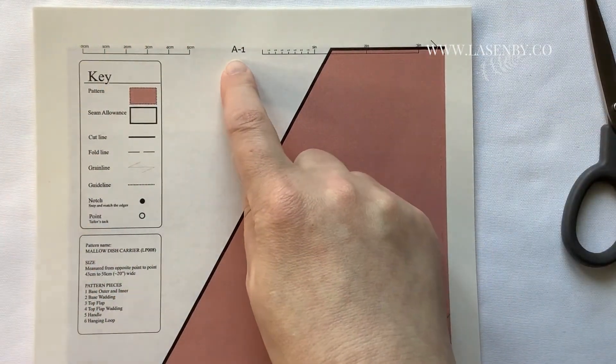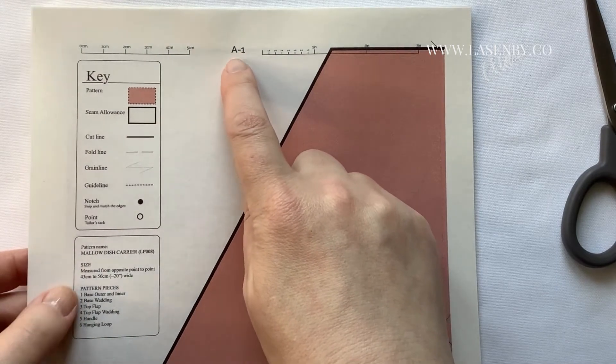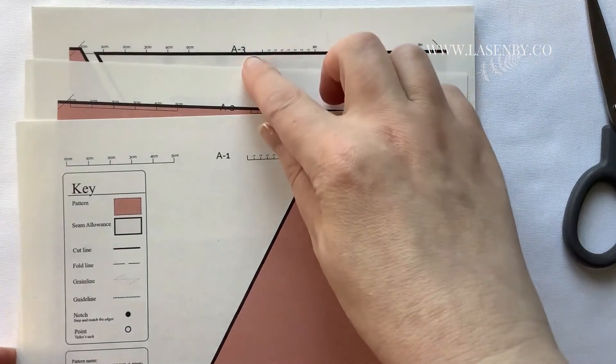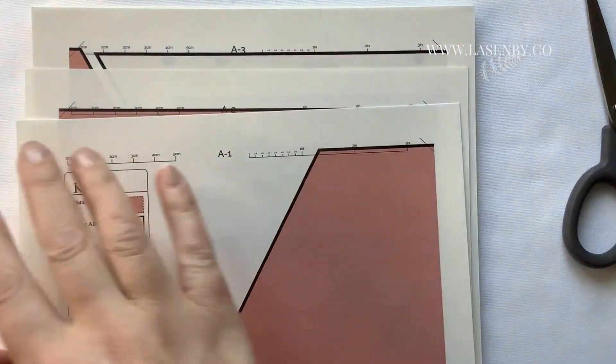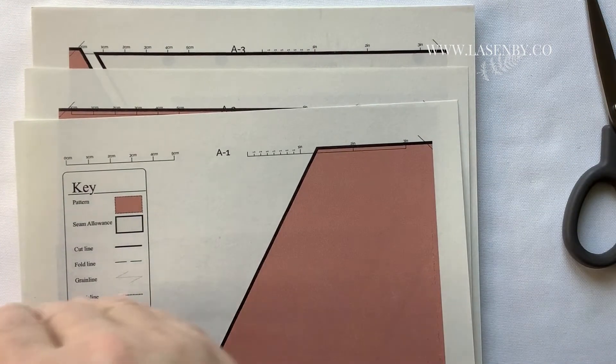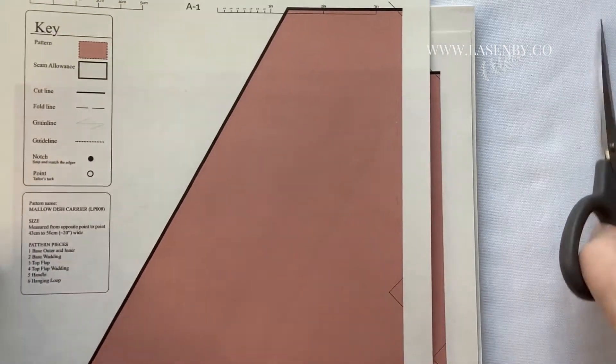And then along the top of the pattern you also have a reference number. So you've got A1, A2, A3 and so on. You have it in rows. Across the top is A1, 2, 3, 4, 5, 6. And the second row is B1, 2, 3, 4, 5, 6. And that's how you actually put the pattern pieces together.